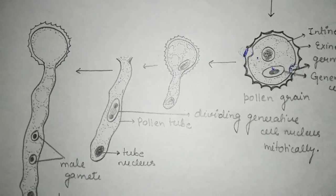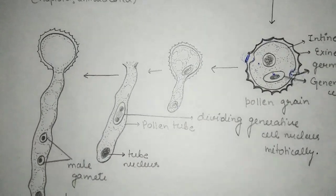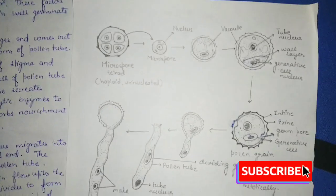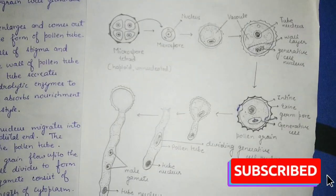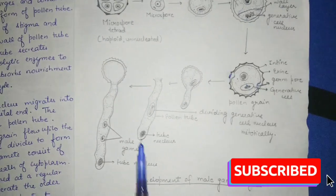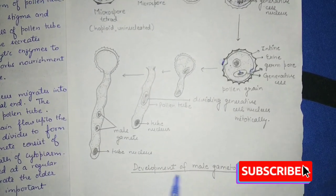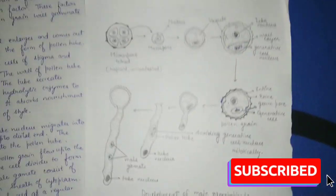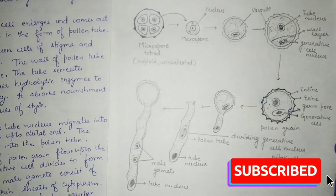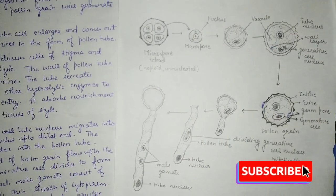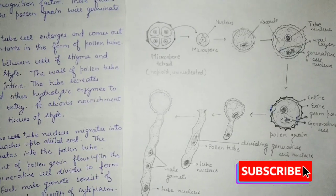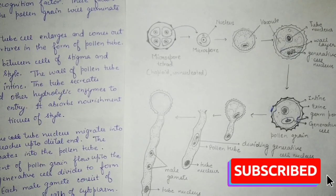This covers the entire development of male gametophyte, which is divided into pre-pollination development and post-pollination development. This is the complete diagrammatic representation of the development of male gametophyte. I hope you liked this video — please like, subscribe, share, and comment. Thank you.